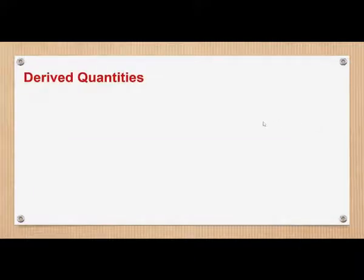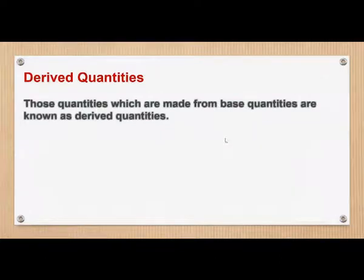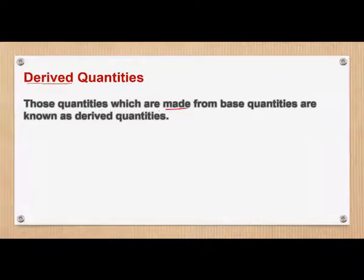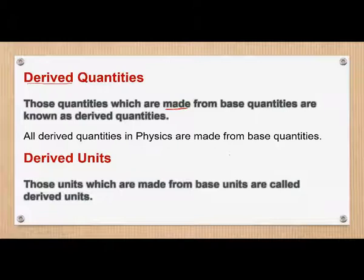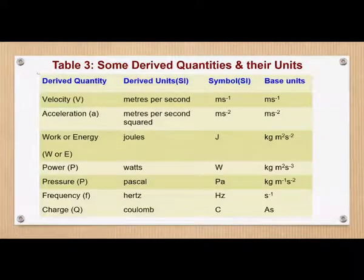After base quantities, what are derived quantities? Those quantities which are made from the base quantities are called derived quantities. 'Derived' means made or extracted — we extract units from the base ones. All derived quantities in physics are made from the base quantities, and derived units are units made from base units.